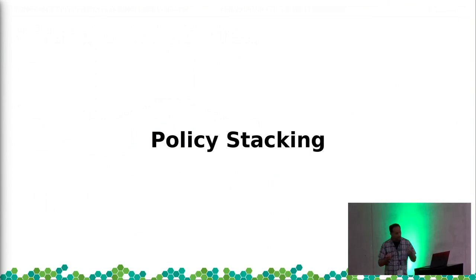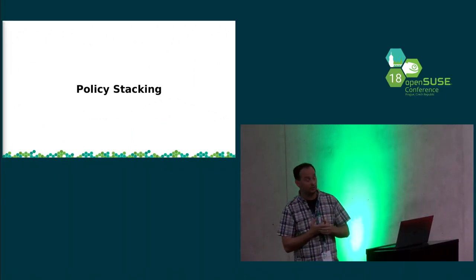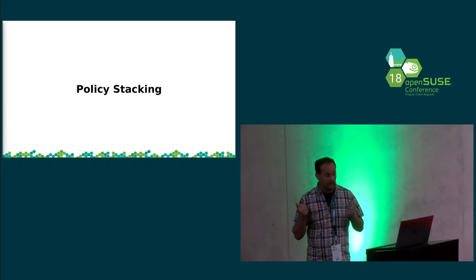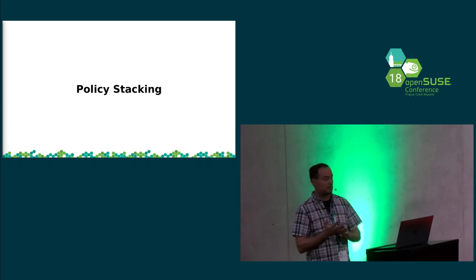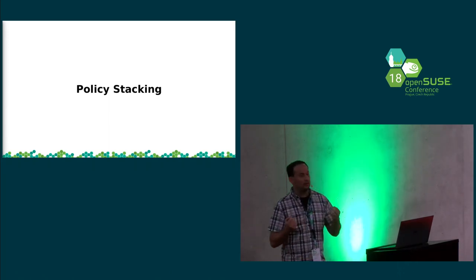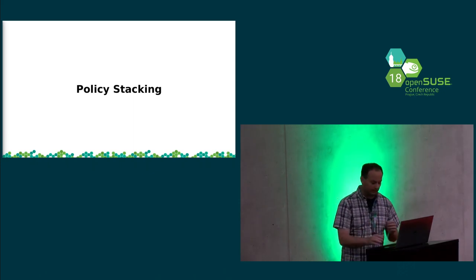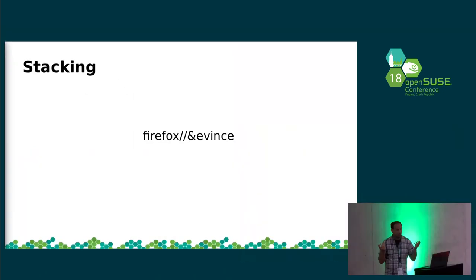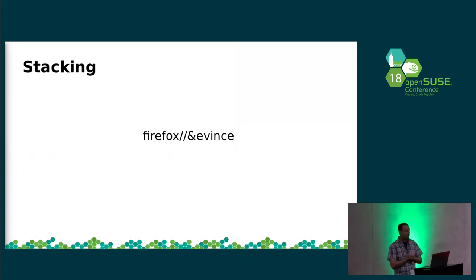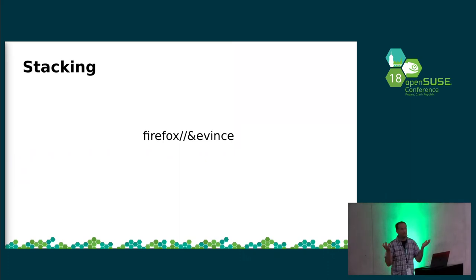The next thing to cover is stacking. This is something that's landed more recently. If you've got AppArmor 2.11 userspace and a 4.13 kernel, you have access to this. It brings runtime dynamic policy composition — specifically an intersection of policies. This brings a lot of flexibility to certain parts of policy. When introspecting, you'll see it show up separated with double slash and ampersand. These two profiles together in the system namespace alone isn't very useful though.